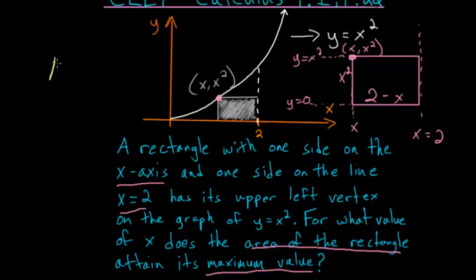So the area as a function of x is just the base times the height, or 2 minus x times x squared. And if we distribute the x squared, we have minus x to the third plus 2x squared. So we have a cubic function here.